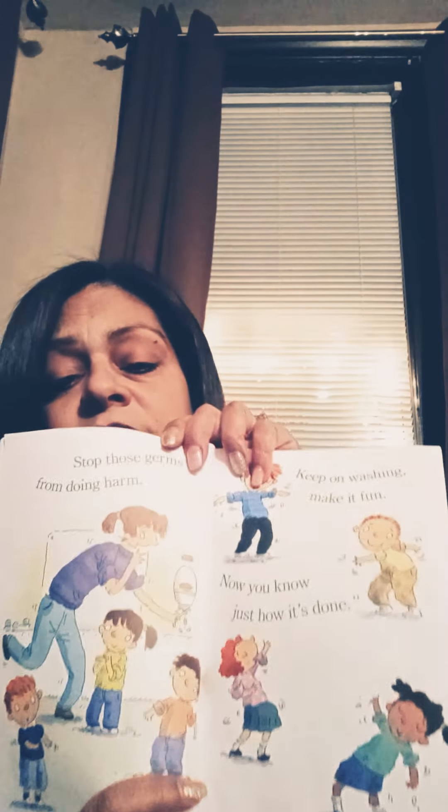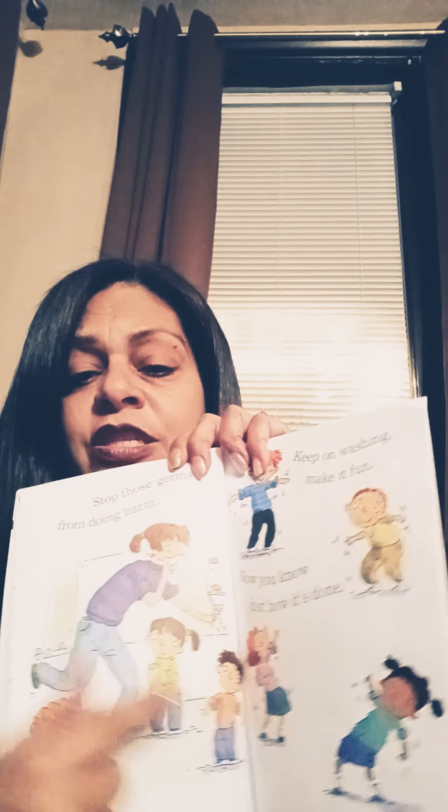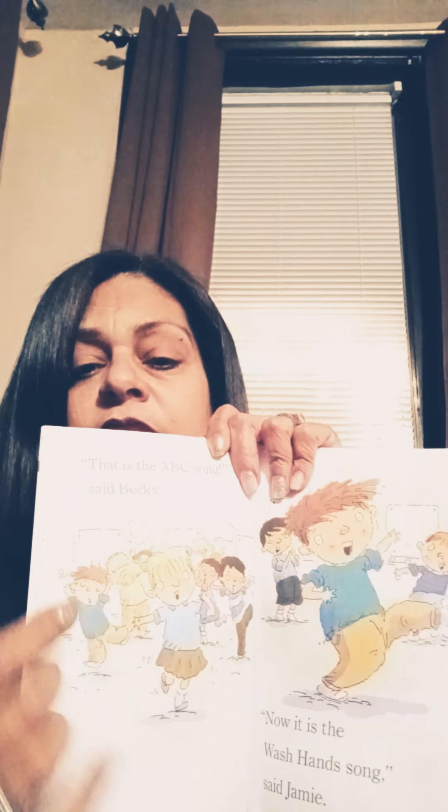Then Mrs. Connor sang: Wash your hands with soap each time and remember the short rhyme. Let the water run really warm. Stop those germs from doing harm. Keep on washing, make it fun. Now you know how it's done. So she was singing a little rhyme and all the kids were enjoying washing their hands. That is the ABC song, said Becky. Now it is the wash your hands song, said Jamie.